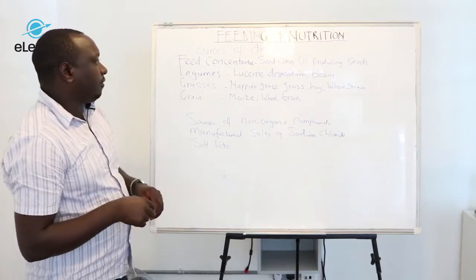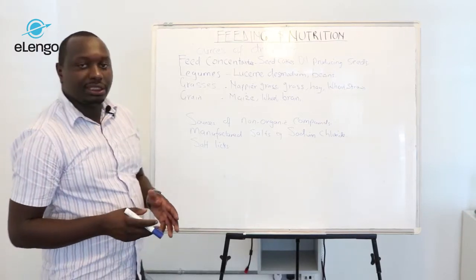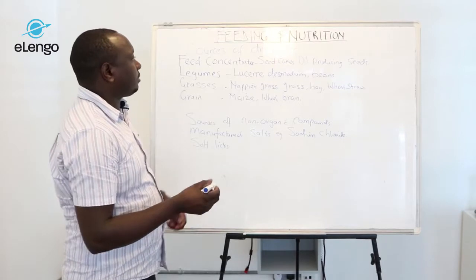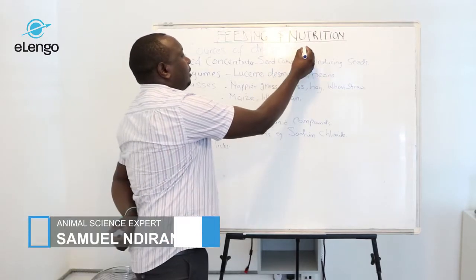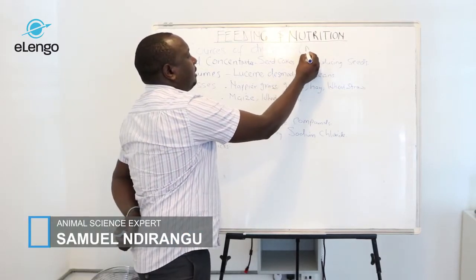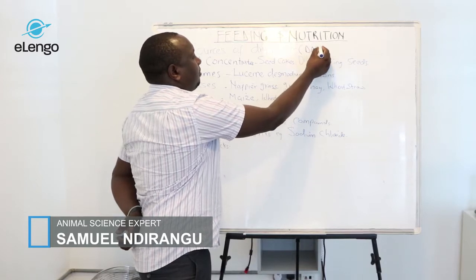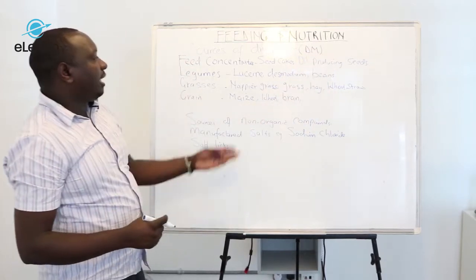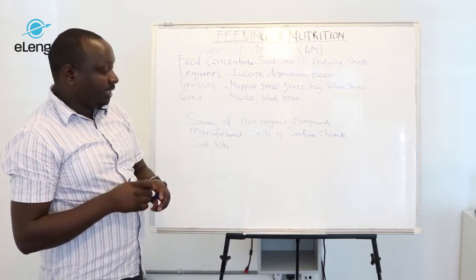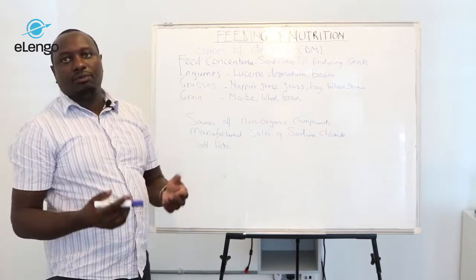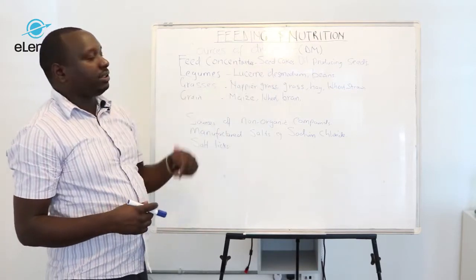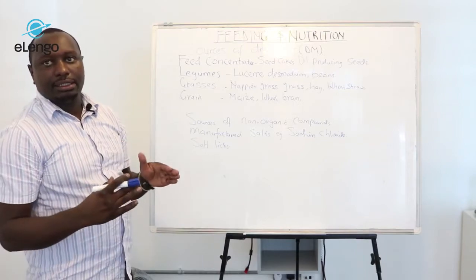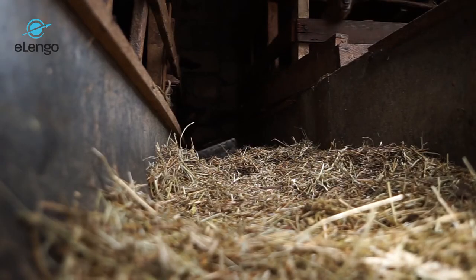Sources of dry matter. First of all, you need to understand what is dry matter, abbreviated as DM. Dry matter, as the word suggests, is the dry part of the fodder after water is removed.